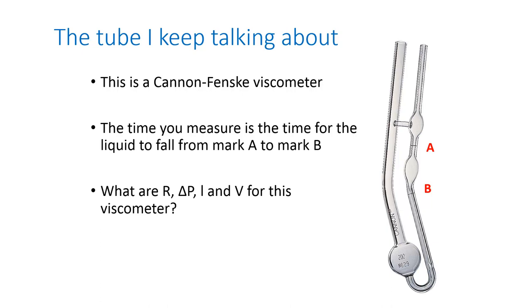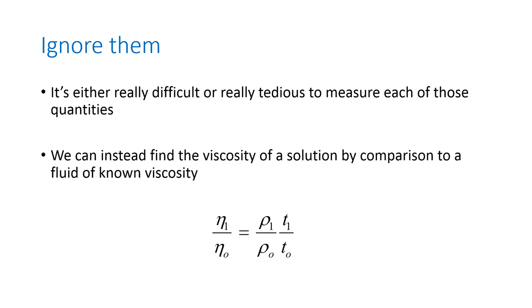V is straightforward. We can fill the viscometer with a pipette. L is the length, and we could attempt to measure that. Delta P and R are practically impossible to measure.